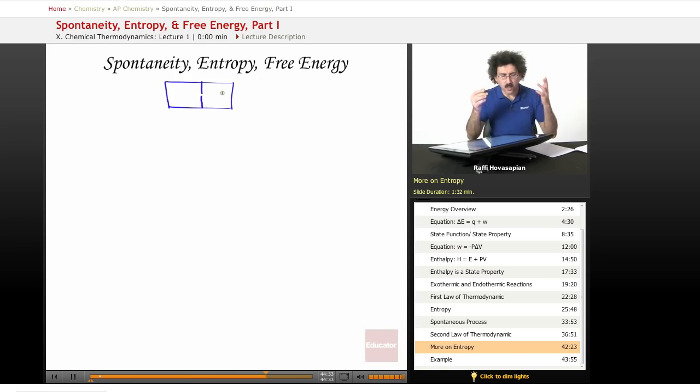So how many different ways are there to arrange it where all four items are on one side? Well, basically, one, two, three, and four, right? There's only one way, so we'll just call this arrangement one. All on one side. There's one way.